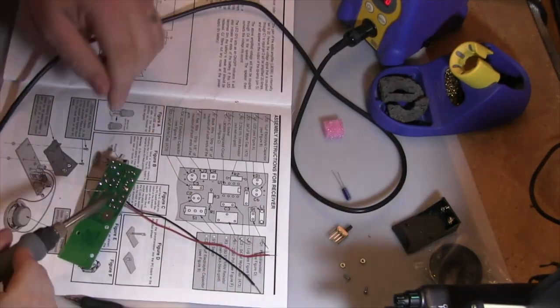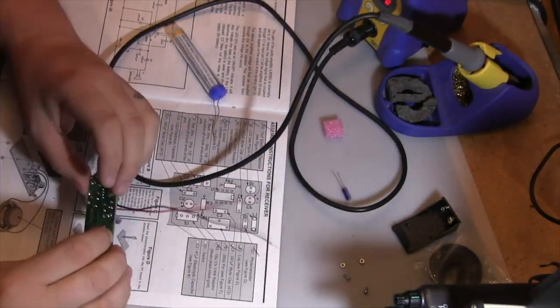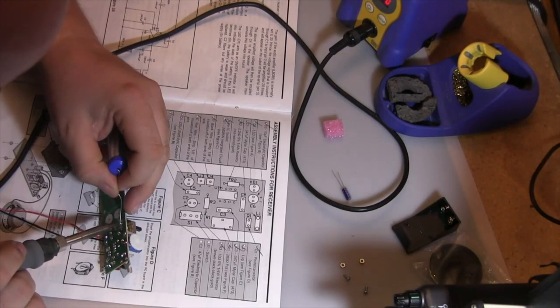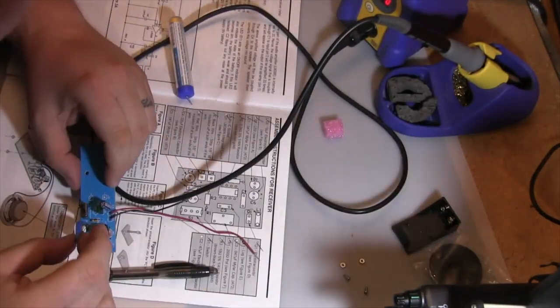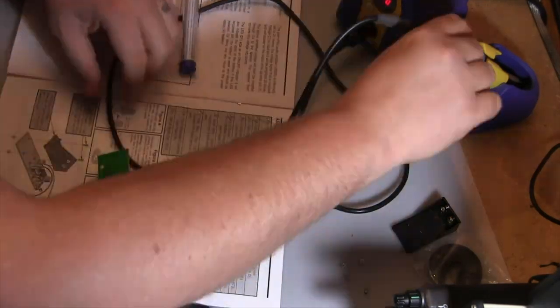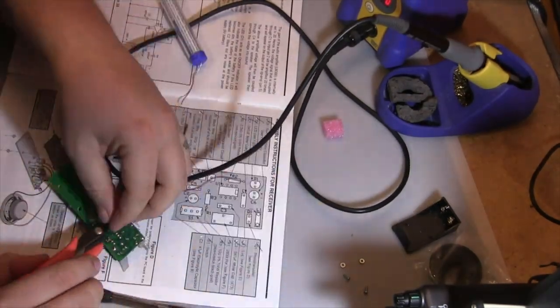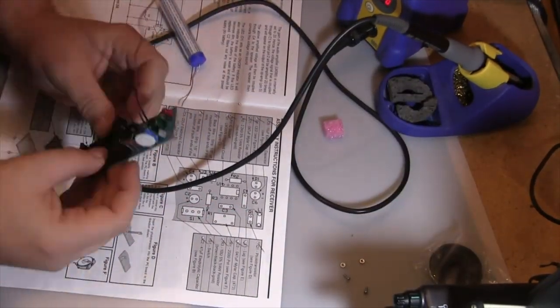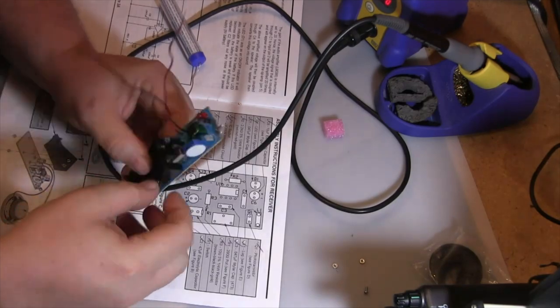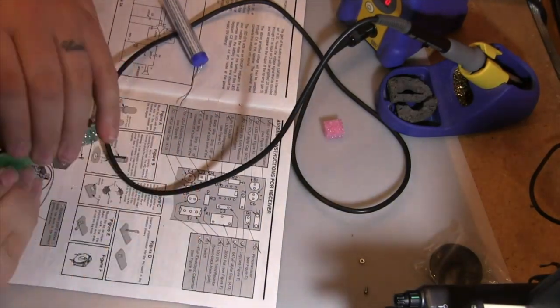The pot that I installed is used to control the volume. We're soldering down the power switch and a few more components. We are just about done with the receiver section. The battery holder is going in place, tightening it down.